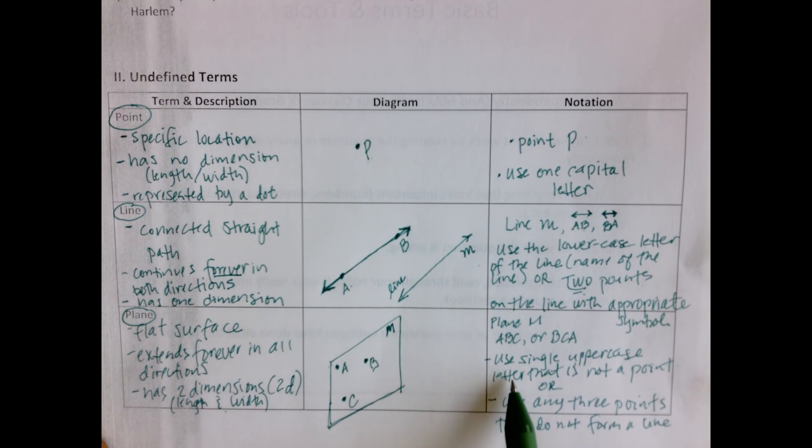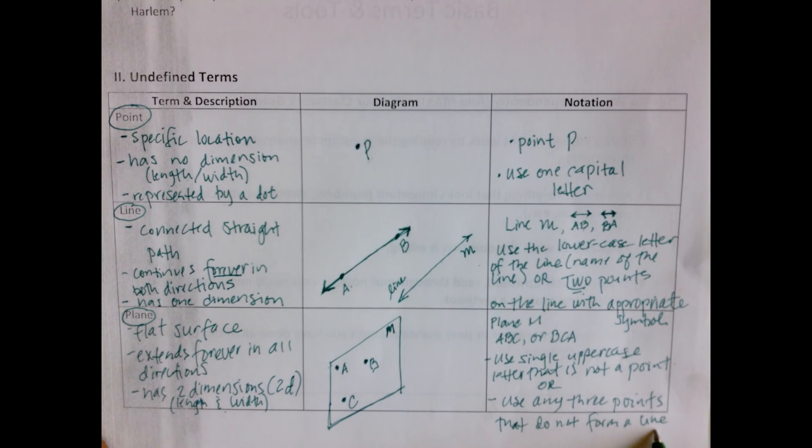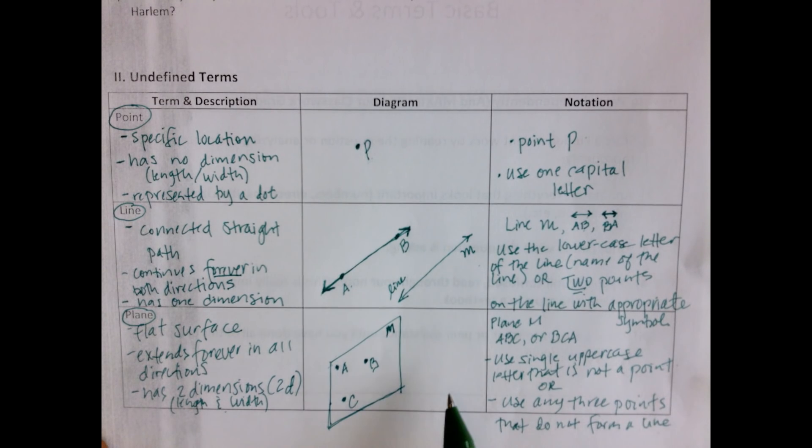This letter here represents the name of the plane. We can name our plane using a single uppercase letter that is not a point, or we can name the plane by any three points in the plane. What's interesting about naming the plane by any three points, like ABC or BCA, is that they cannot be collinear, meaning the points cannot form a line. Collinear essentially means that all the points are on the same line. Because C doesn't form a line with A and B, I can name it ABC.